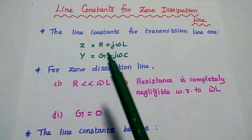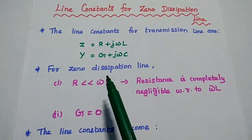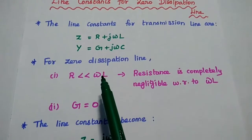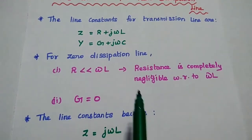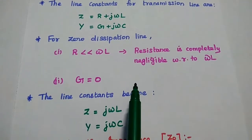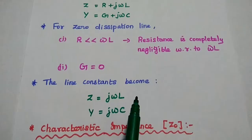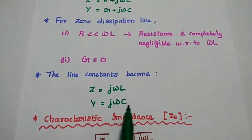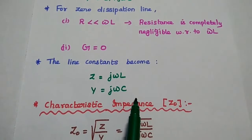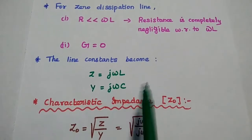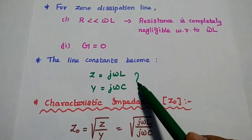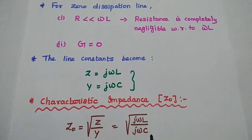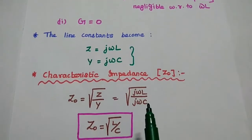Based on these two conditions, we can modify Z and Y. The first term Z becomes only j omega L because R becomes zero. And Y is equal to j omega C because G is equal to zero. These two are the Z and Y values for zero dissipation line.